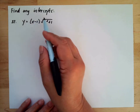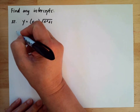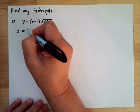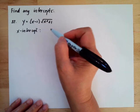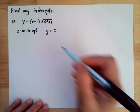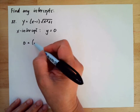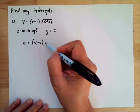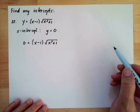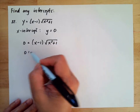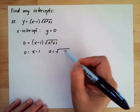Find any intercepts. For the x-intercept, we need to substitute y equal to 0. So we have 0 is equal to (x minus 1) times the square root of x squared plus 1. Then we equate each factor to 0 to solve for x.